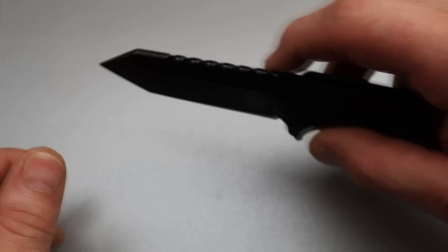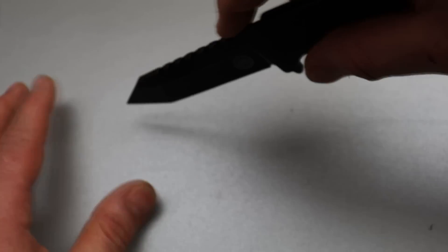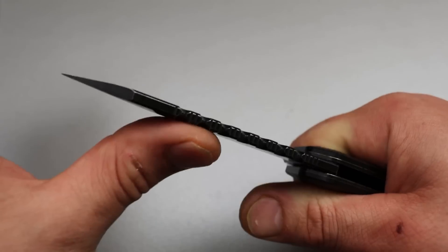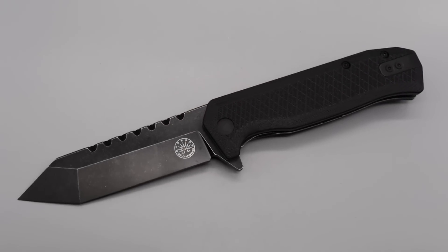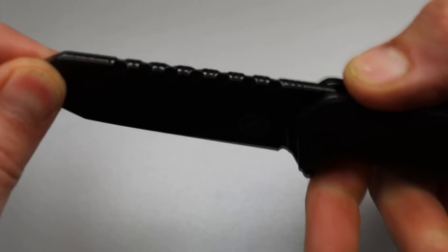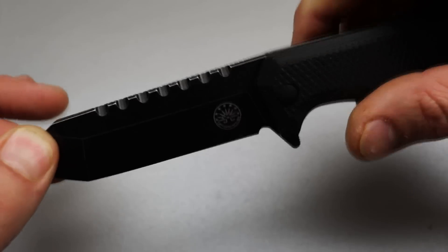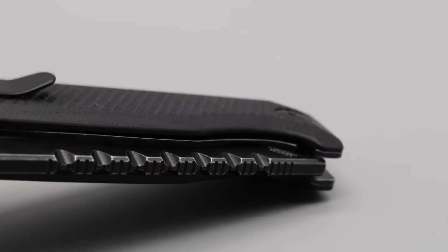This secondary tip is very acute, so you can use it, but you can also use the primary tip. It's going to be very pokey, nice and robust, but it's still going to slice really good. The jimping on the spine almost has a saw look to it, but it is just jimping and it's nice, comfortable jimping.